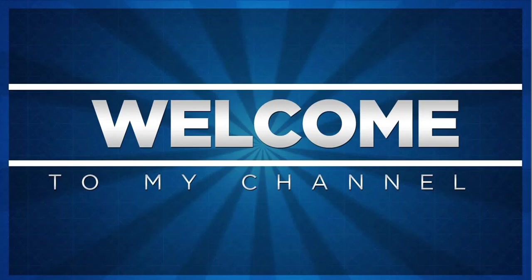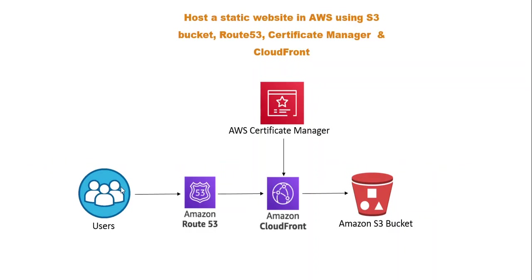Just to give you an overview of how the architecture looks. When a user accesses the website — which will be the domain name of your website — it will resolve to an endpoint from Route 53. The endpoint will then be redirected to Amazon CloudFront to help serve the global audience.